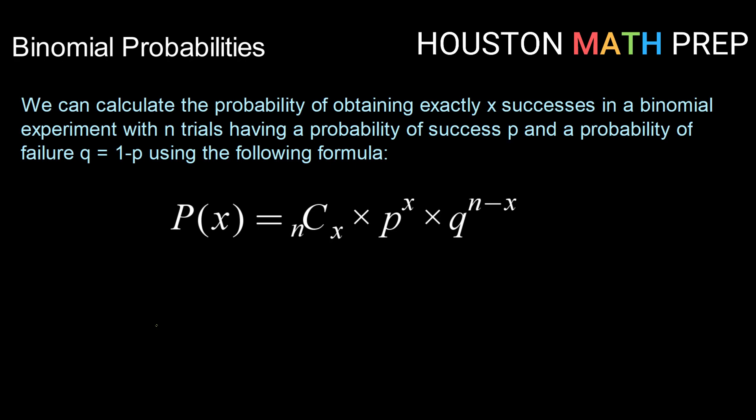We can calculate the probability of obtaining exactly x successes in a binomial experiment with n trials having a probability of success p and a probability of failure q using the following formula. The probability of x successes looks really intimidating but is actually pretty easy.